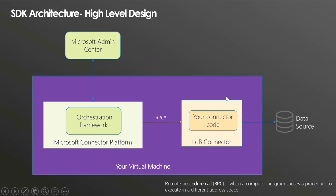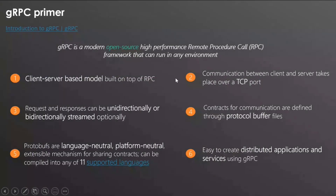This is how the architecture is designed so you can write your connector code in multiple languages. The Microsoft Connector Platform hosts the orchestration framework — the framework that manages and schedules all your crawls — and it talks via Remote Procedure Calls to your line-of-business connector code. Your connector code is responsible for talking to the data source and getting the data. The RPC framework is based on gRPC, which is open source and works in a client-server model.